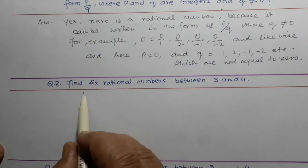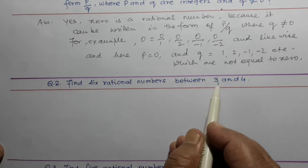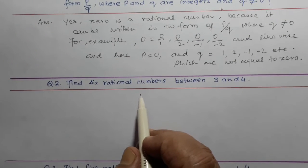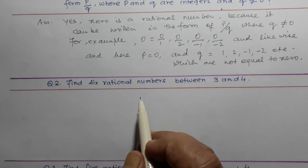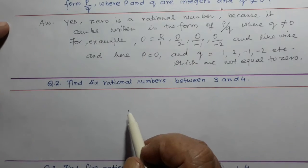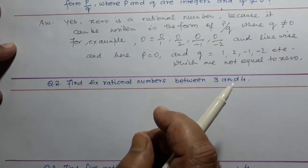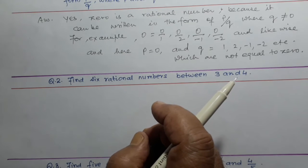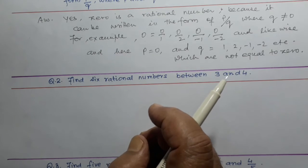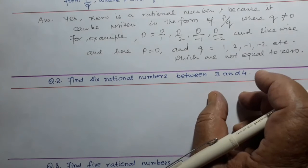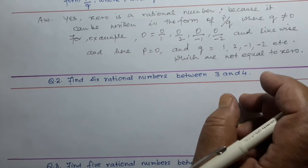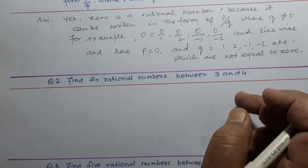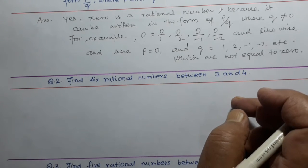Question 2: Find 6 rational numbers between 3 and 4. Jab hamko 6 rational numbers find karne hain, to 6 se zyada kisi bhi number se numerator aur denominator ko multiply kar dete hain — to value mein koi change nahi hoga aur uske beech ke rational numbers bhi nikal jayenge. Kisi bhi do numbers ke beech mein infinite rational numbers hote hain. Aisa hi 3 and 4 ke beech mein bhi infinite rational numbers ho sakte hain.